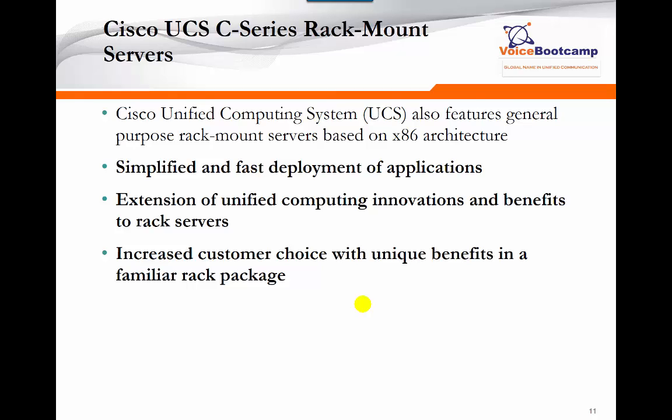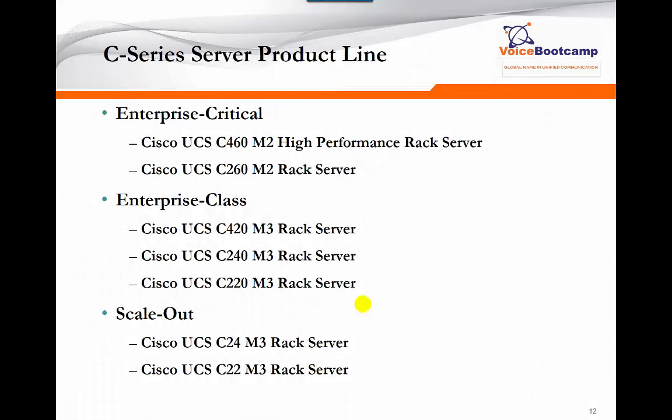Cisco Unified Computing System also features general-purpose rack-mount servers — these are the C-series servers. For companies that do not want to invest in a big chassis or SAN, or may not have the budget, the C-series is a good option. These are individual physical servers that offer simplified and fast deployment. They are 1U or 2U rack-mountable servers depending on the model and support running multiple applications. The C-series gives customers a choice between B-series and C-series and provides benefits familiar to rack environments. Model numbers keep changing, so always check the Cisco website for the most up-to-date information.